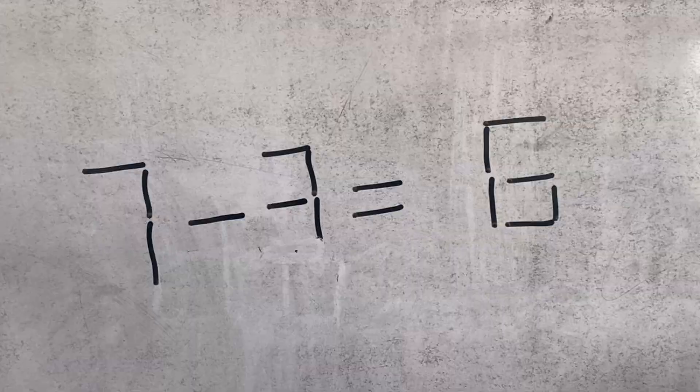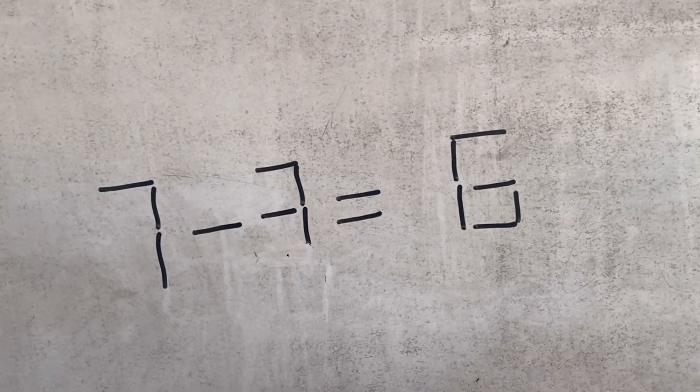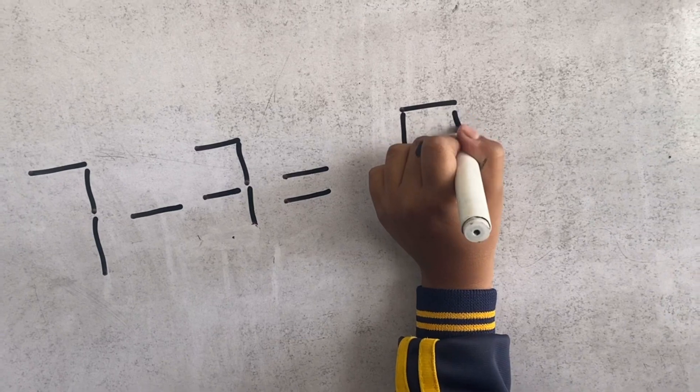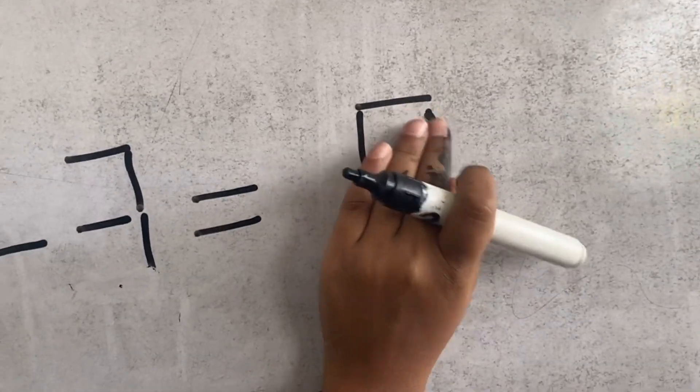And this one. Fast. What is this? 7 minus what? Is it? 7 minus.